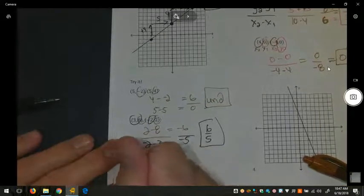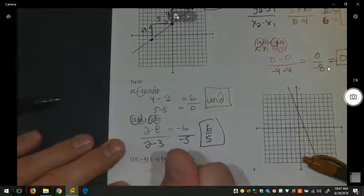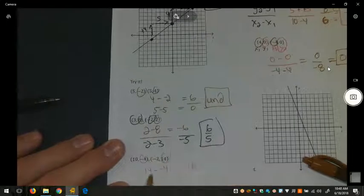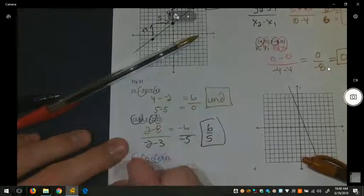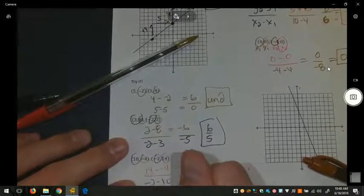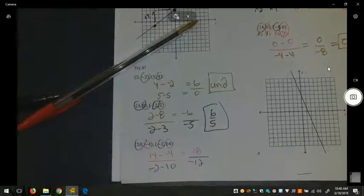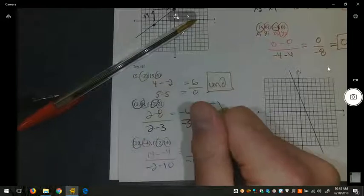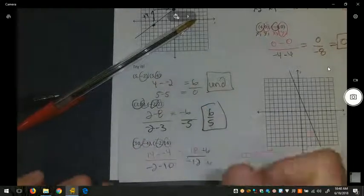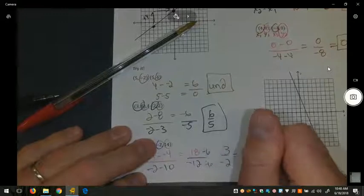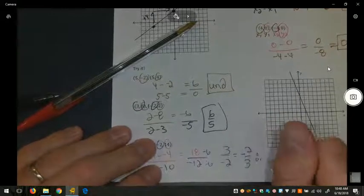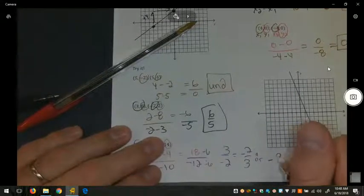In the next one, fourteen minus negative four becomes positive eighteen. The double negative becomes a plus sign. Negative two minus ten becomes negative twelve. Both eighteen and negative twelve are divisible by six, giving us three over negative two, or negative two thirds, or negative three over two.